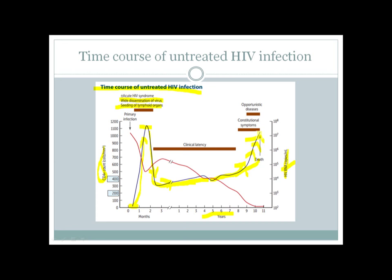Regarding CD4-positive cell count: initially the counts are normal, above 1000, then it drops a bit but remains within normal range. When HIV viruses start to replicate again in their fast ascent, the CD4-positive cell count starts to drop. When RNA copies become higher, CD4 counts become lower, and clinical symptoms appear. When the count is less than 200, there will be severe opportunistic infections like Pneumocystis.